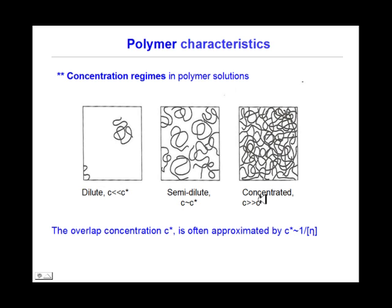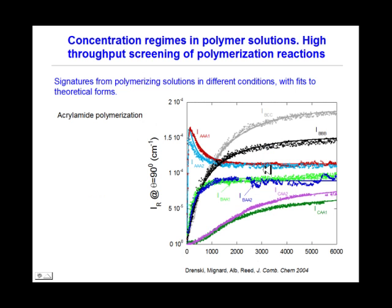Concentration regimes in polymer solutions go from dilute to semi-dilute and highly concentrated solutions. This was exemplified by showing different signatures from polymerization reactions done under different conditions, which fit to theoretical forms. Shown is the excess light scattering intensity for polymer solutions versus time for reactions done in dilute, semi-dilute, and highly concentrated regimes. This monitoring allowed computation of different parameters and features of the reactions, including interaction kinetics.